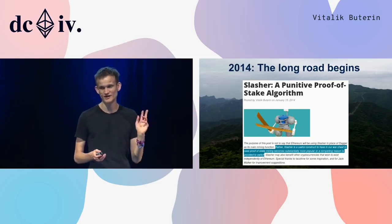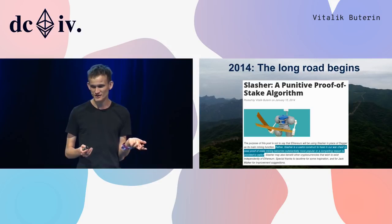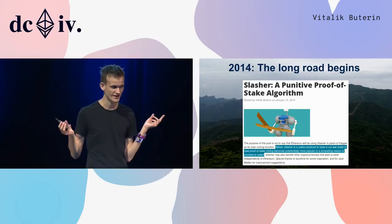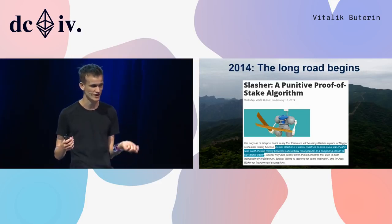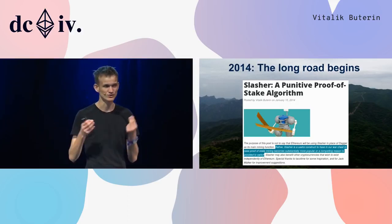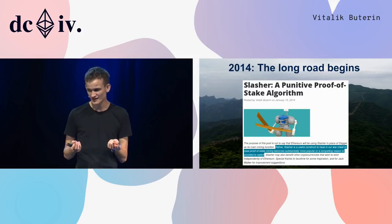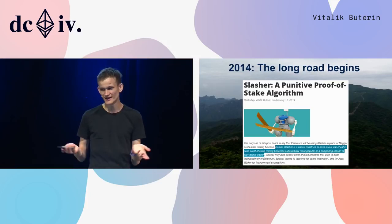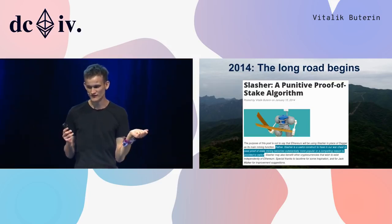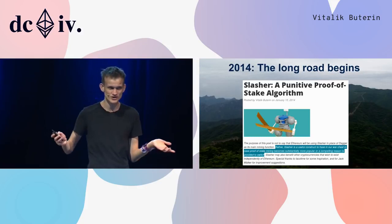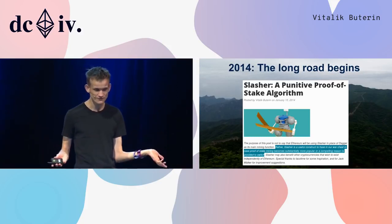It started with a blog post I published in January 2014 describing an algorithm called Slasher, which introduced the most basic concept in a lot of proof-of-stake algorithms: if you get caught doing something wrong, this can be proven and you can be penalized for it, and this can be used to increase security. But at the time, as you can see from the slide, I believed that 'Slasher is a useful construct to have in our war chest in case proof-of-stake mining becomes substantially more popular, but we're not doing that yet.'